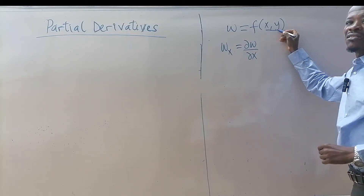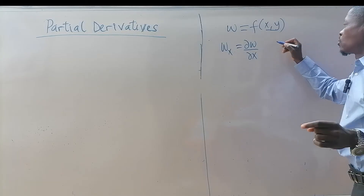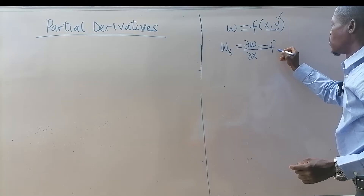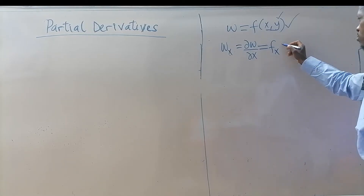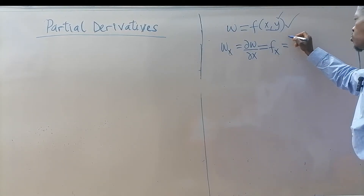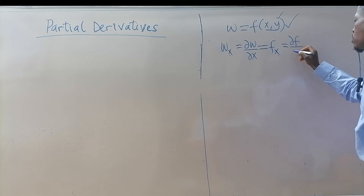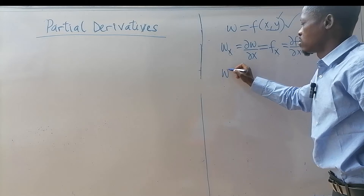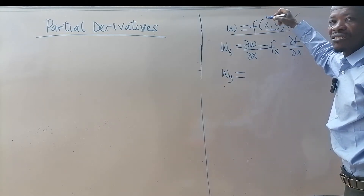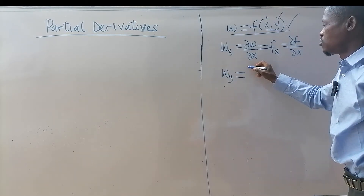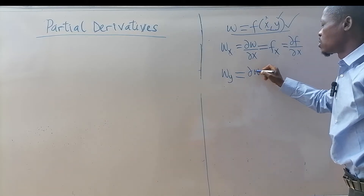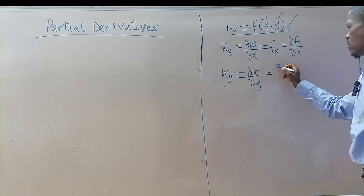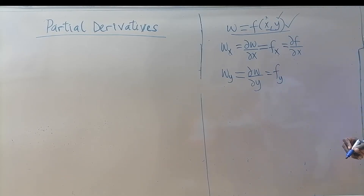When differentiating with respect to x, we are keeping y constant. Another equivalent notation is f subscript x. We can also differentiate this function with respect to y, keeping x constant. You can write it in fraction notation as del w over del y, which is the same as f subscript y.